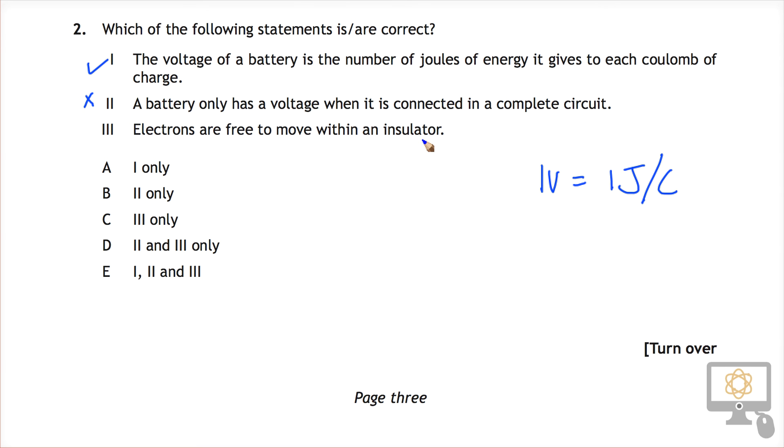And three: electrons are free to move within an insulator. Well, the problem here is the word insulator. Electrons are only free to move within a conductor, so that is also not correct. Therefore, the only answer which is correct is A.